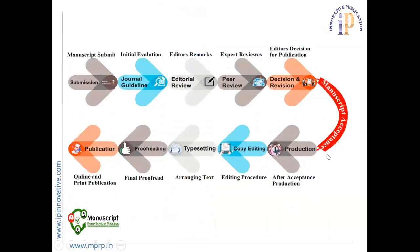There is a flowchart showing how to peer review and publish a paper. First, submission of an article to a journal; then the journal handler checks whether the paper follows the journal guidelines; then editorial review; after that, expert review and evaluation; then the editor's decision for publication. If the manuscript is accepted, it goes to the production level, then copy editing, then typesetting. After all typesetting corrections, proofreading happens, and finally the paper is ready to publish online or in print.